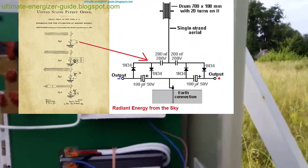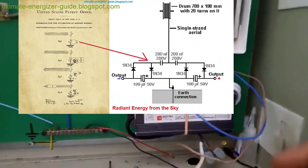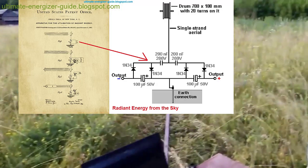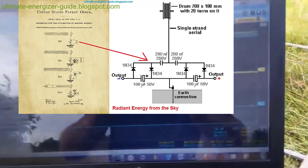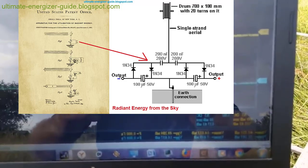The fundamental circuitry underpinning the extraction of aerial energy revolves around LC oscillation circuits. These circuits comprise capacitors and inductors interconnected in series, parallel, or combination configurations.